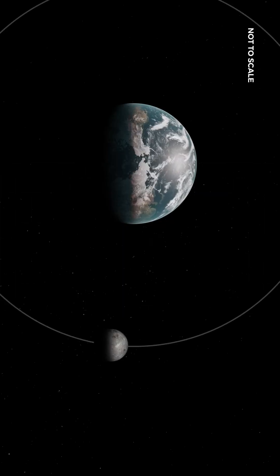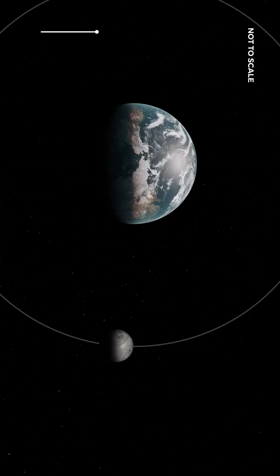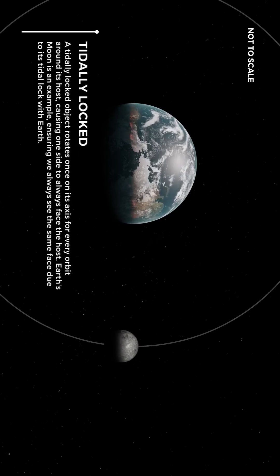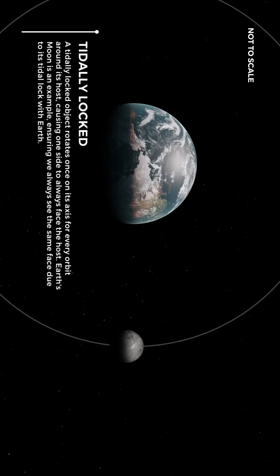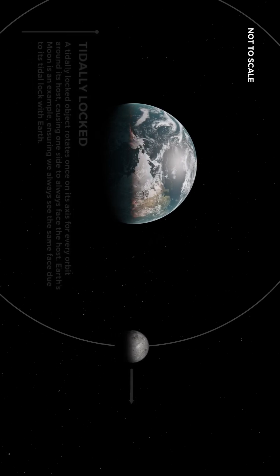The telescope needs to be on the far side of the moon to avoid noise from Earth. It needs to be far from the side we see, have the right size, and be in the right spot.